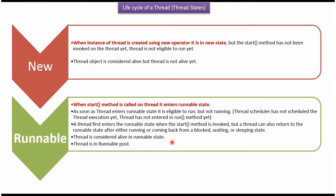When the start method is called on the thread, the thread enters the runnable state. As soon as the thread enters runnable state it is eligible to run, but it is not yet running because the thread scheduler has not scheduled the thread execution yet and the thread has not entered the run method. In runnable state, the thread is considered alive and is in the runnable pool.